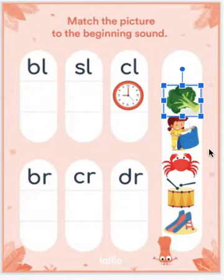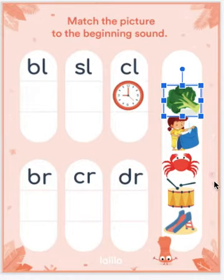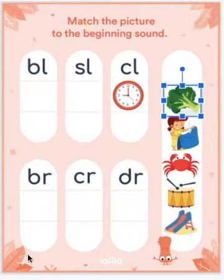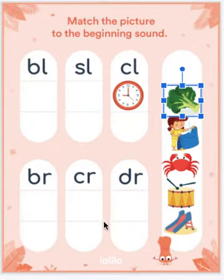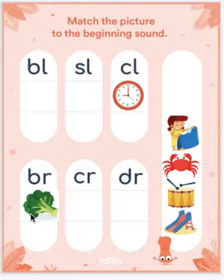What's this one? Broccoli. Say broccoli, and now stretch out the very beginning of the word. So do you think broccoli starts with BR, CR, or DR? Touch which column you think broccoli should go in. Here we go — BR. So the consonant blend at the beginning of broccoli is BR, B-R.